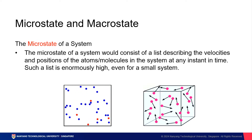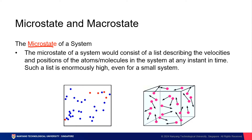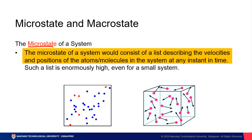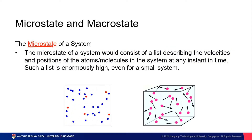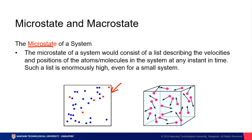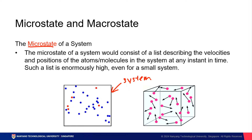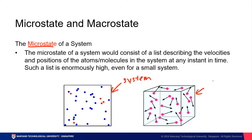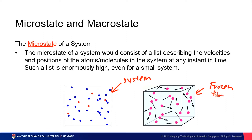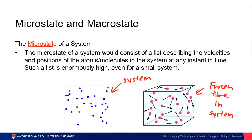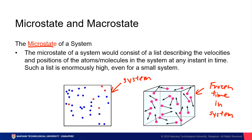What is not a macroscopic property is essentially a system's microstate, as opposed to a macrostate. The microstate of a system consists of a list describing the velocities and positions of all the atoms and molecules in a system. Consider this system here — in any system, molecules, atoms, and particles are moving all of the time. If I were to freeze time, I would essentially take a snapshot of all velocities and positions of all atoms and molecules at that point in time.